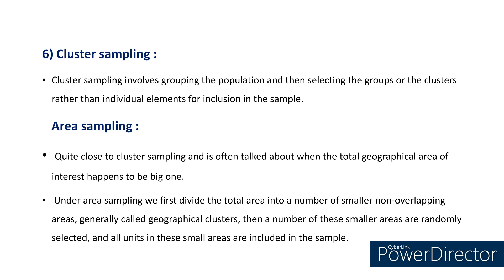Cluster sampling involves grouping the population and then selecting the groups or clusters rather than individual elements for inclusion in the sample — we focus on groups instead of individuals. Area sampling is quite close to cluster sampling and is often used when the total geographical area of interest is a big one. Under area sampling, we first divide the total area into a number of smaller non-overlapping areas, generally called geographical clusters. Then a number of these smaller areas are randomly selected and all units in these small areas are included in the sample.